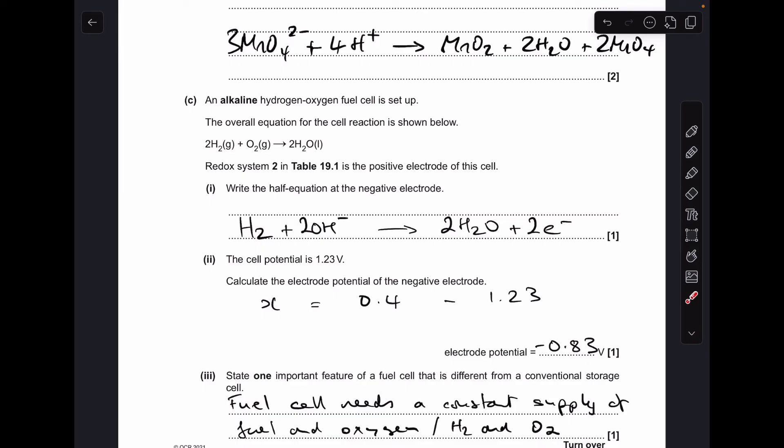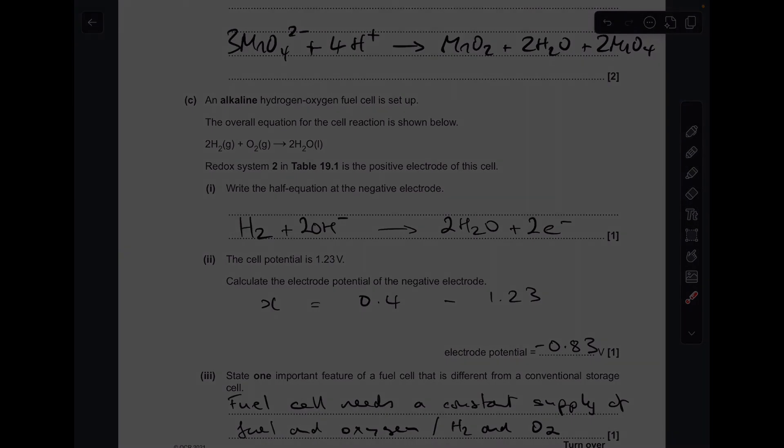And finally, one important feature of a fuel cell that's different from a conventional storage cell. Just think of a conventional storage cell as a typical battery where the chemicals are stored inside the cell. A fuel cell is different because the chemicals aren't stored in there, they are supplied to the fuel cell. So we're going to say fuel cell needs a constant supply of fuel and oxygen, or because this is talking about a hydrogen fuel cell, you could specify hydrogen and oxygen there.